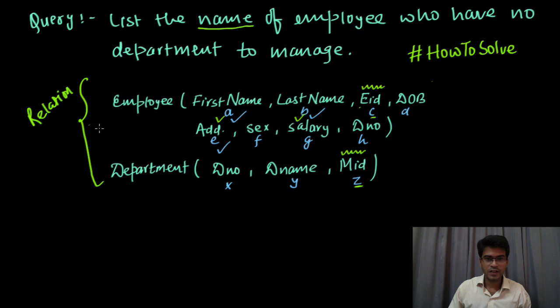So this is our relation. Now what we have to do, we have to output first name and last name. So we will take the corresponding domain variables that is a and b then we have to write down the condition.